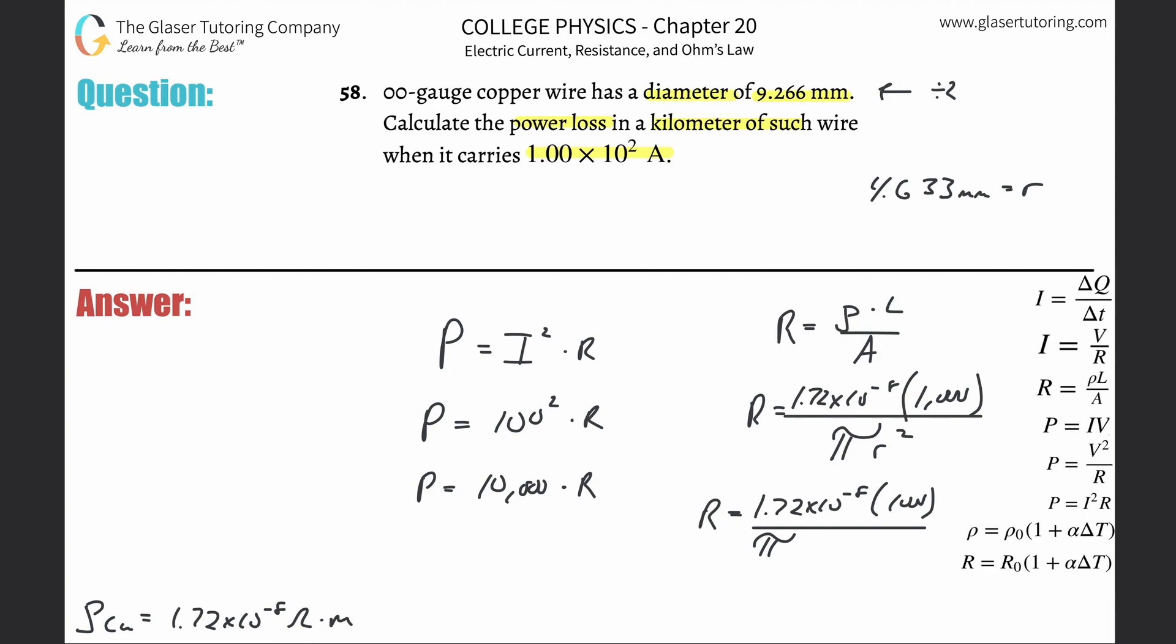So then divide that now by pi, multiply by our radius. So this is 4.633 times 10 to the minus 3. So 1.72 times 10 to the negative 8, multiply by 1,000. Then divide that now by, in parentheses, plug in your pi. Multiply that now by 4.633 times 10 to the minus 3. Square that.